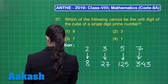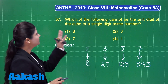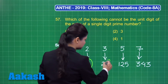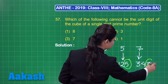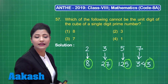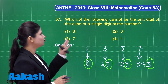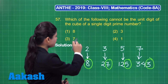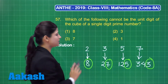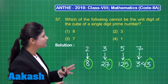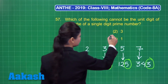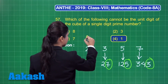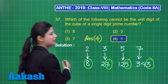Now we locate the unit digit of the cube of each single digit prime number. The unit digits are 8, 7, 5, and 3 respectively. The question asks which of the following cannot be the unit digit. I can clearly find that 8 is there, 7 is there, and 3 is also there, but 1 is not a unit digit of any cube of a single digit prime number. So the correct answer for this question is option number 4.